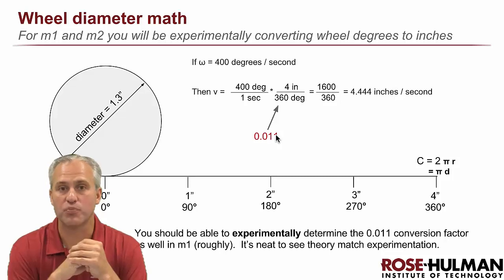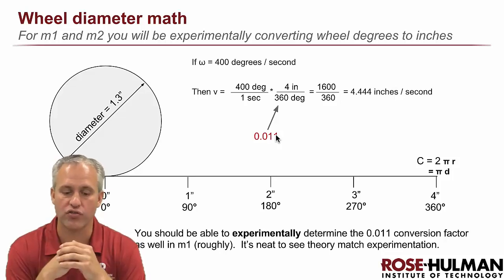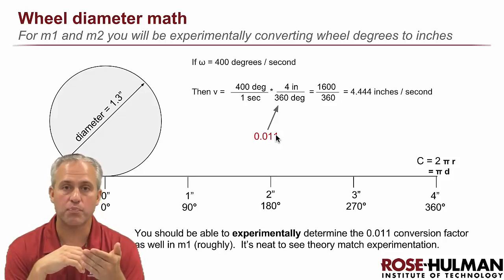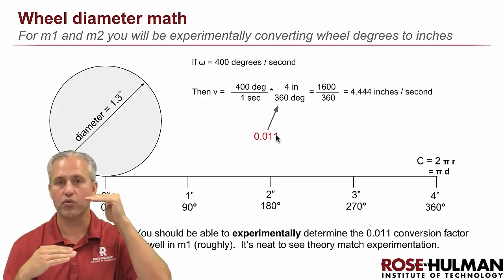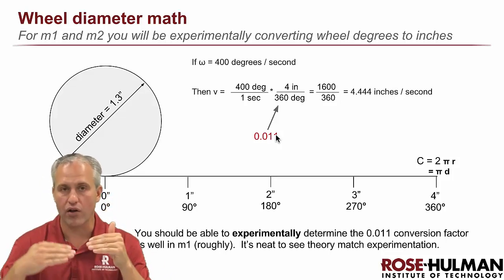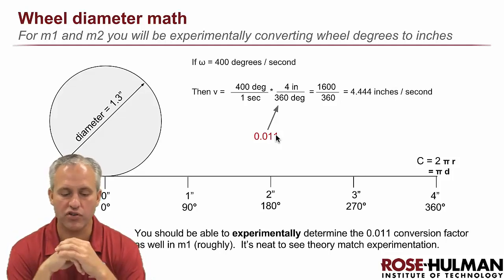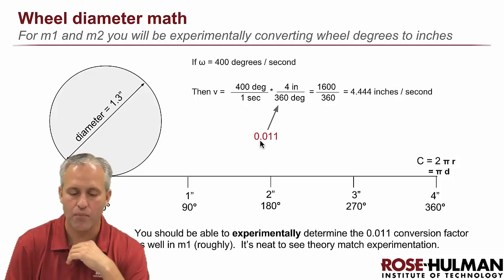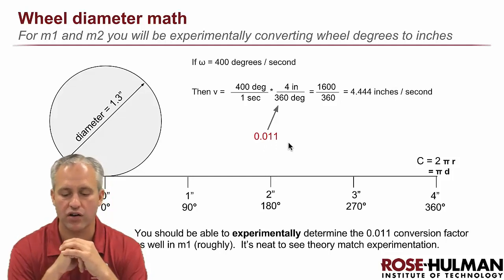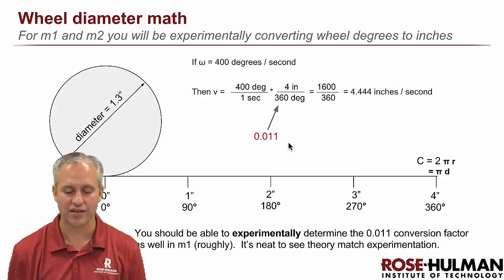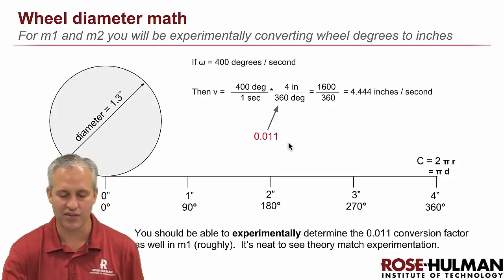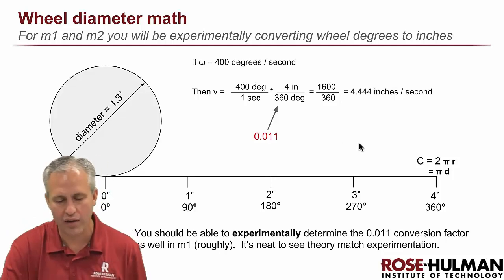You can actually experimentally determine that conversion factor. So M1, you're going to experimentally determine that conversion factor. Your experiment is going to be a little off and that's because motors don't start instantly at that speed. They take a little while to ramp up to it. So your experiment will be a little off, but you should get something in the neighborhood of 0.01 for that conversion factor. And hopefully your experiment matches the theory. I always like to do things in classes where experiment matches theory. That's M1 and M2.